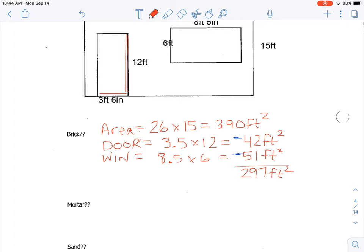Our rule of thumb then is to estimate 7 brick per square foot, so we're going to multiply that by 7 to get—we estimate that we need 2,079 brick.